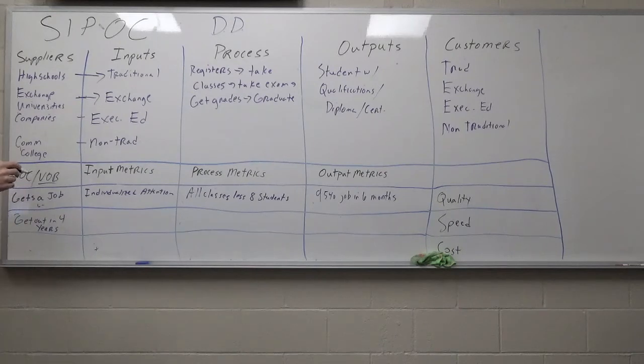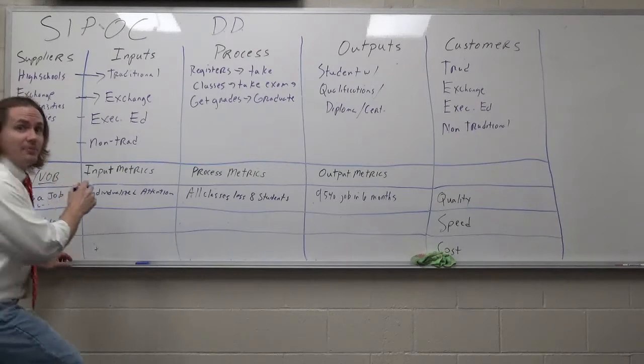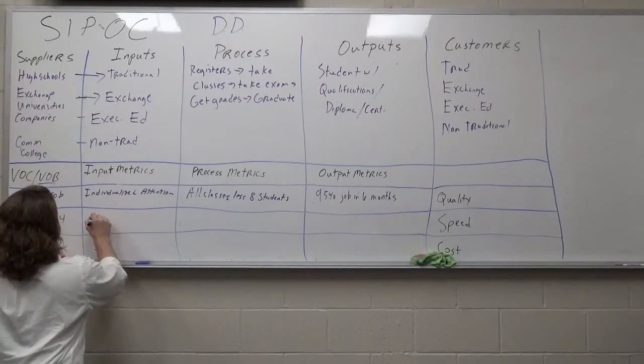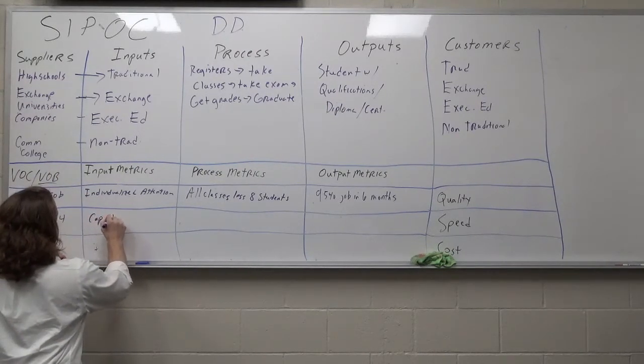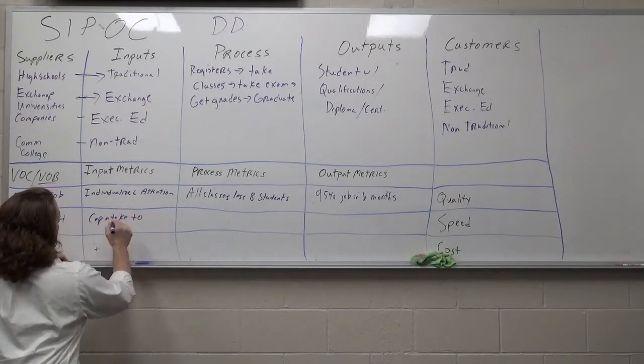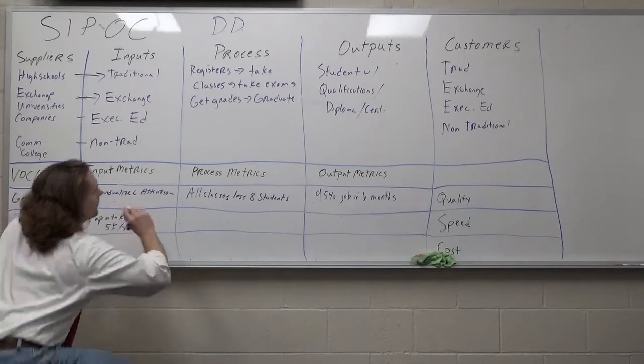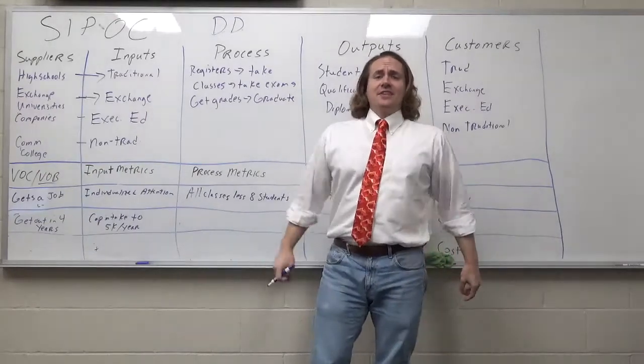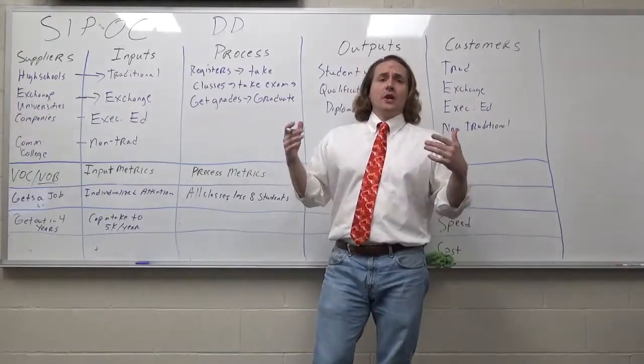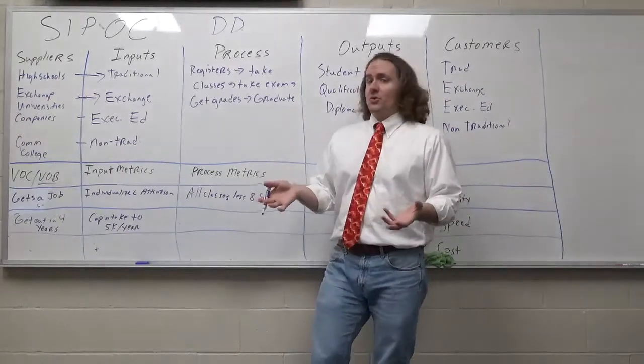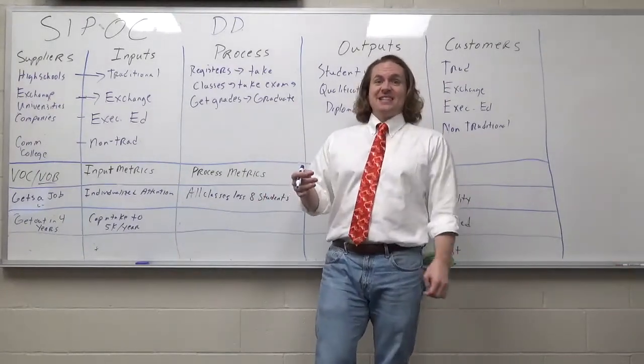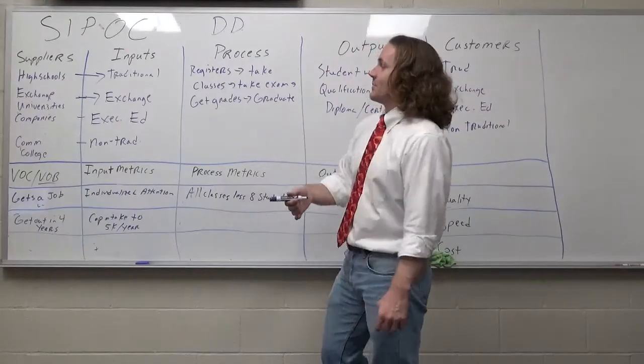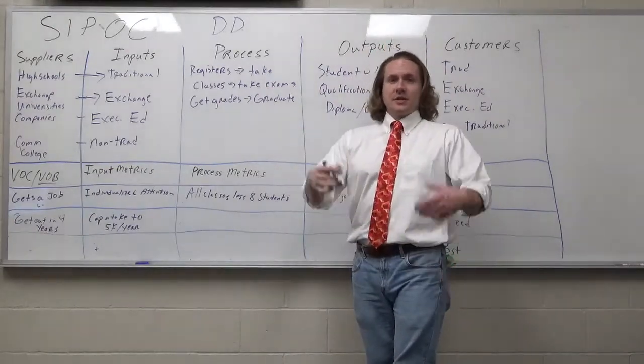Input metric, we need to make sure that, well, in this case, for an input metric, maybe you cap the classes, cap intake to whatever your university is, 5K per year. Why I say cap the intake, let's say that you have a university that can only take 5,000 students per class. If you took in more than that, you'd wind up crowding out your classes and maybe not everybody gets out in four years. That's why I'm saying that.